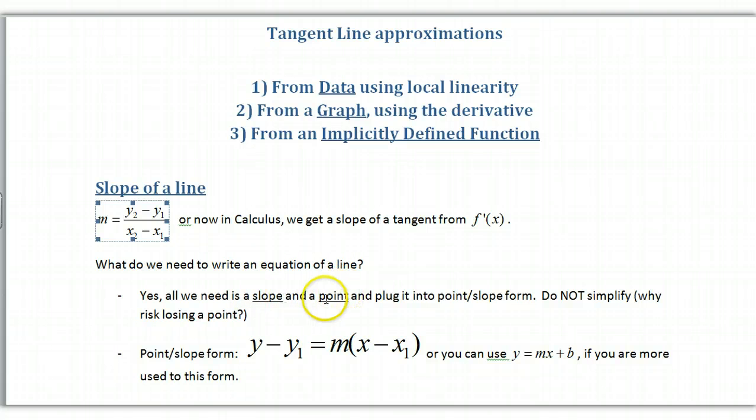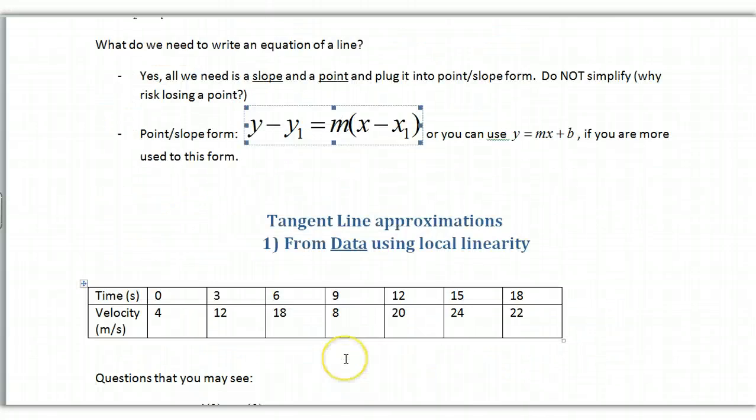We need to plug it into the point-slope form, which is y minus y1 equals m times x minus x1. Don't simplify this once you plug in the values, just go with it. You just have to figure out where you get your slope from and where you get your point from. You can also use y equals mx plus b, but I like to use point-slope form, it's way easier.